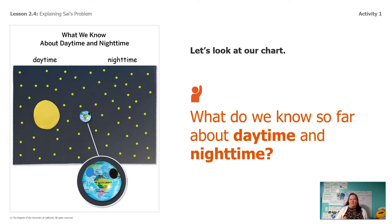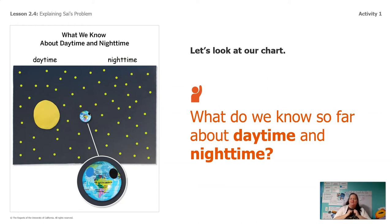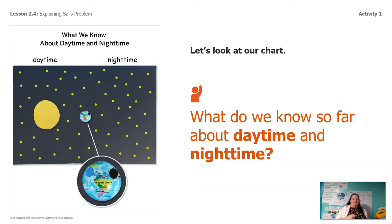Let's remember first what we know so far about daytime and nighttime. What do we see in the sky when it's daytime? That's right, we see the sun. And what do we see in the sky when it's nighttime? That's right, we see the stars. So when it's daytime, the part of the earth that you're on is facing the sun, and when it's nighttime, the part of the earth that you're on is facing the stars.